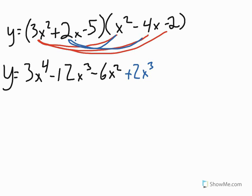And then I do the 2x times negative 4x, which 2 times negative 4 gives me negative 8, and x times x gives me x squared. And then I go ahead and I do the 2x times the negative 2, which is going to give me a negative 4x.